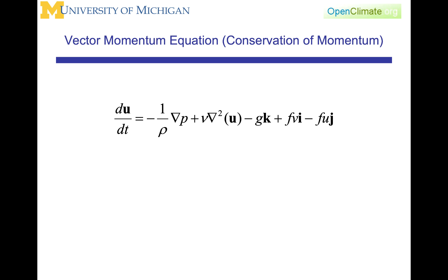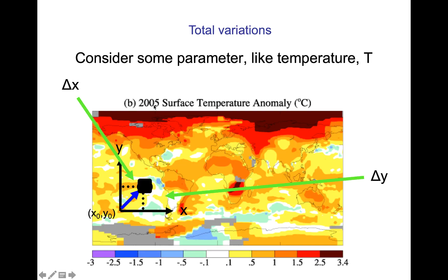I'm going to use this field of the 2005 surface temperature anomaly, which is a difference from a long-term average. I'm going to place a coordinate system here, an x-y coordinate system. I'm going to choose a point x-naught and y-naught, and I'm going to take my idealized parcel, which is this black square, and that's going to originally be at x-naught and y-naught, and I'm going to move that parcel to a new position, which is displaced delta x in this direction and displaced delta y in this direction.